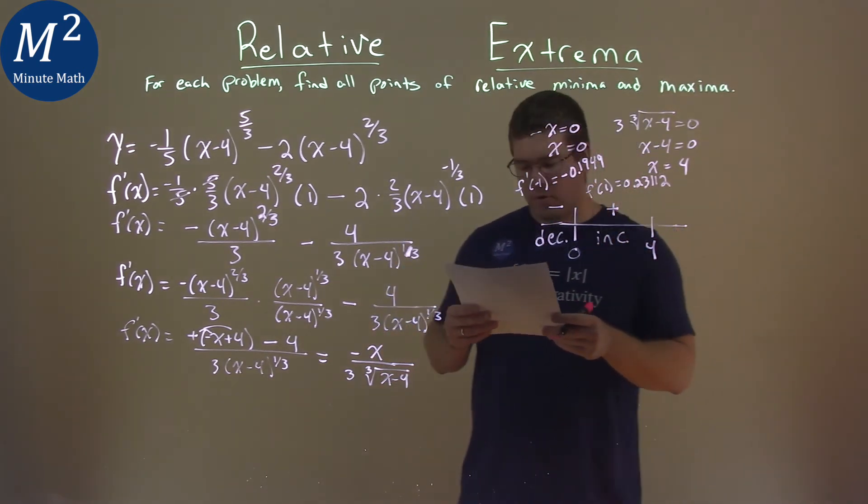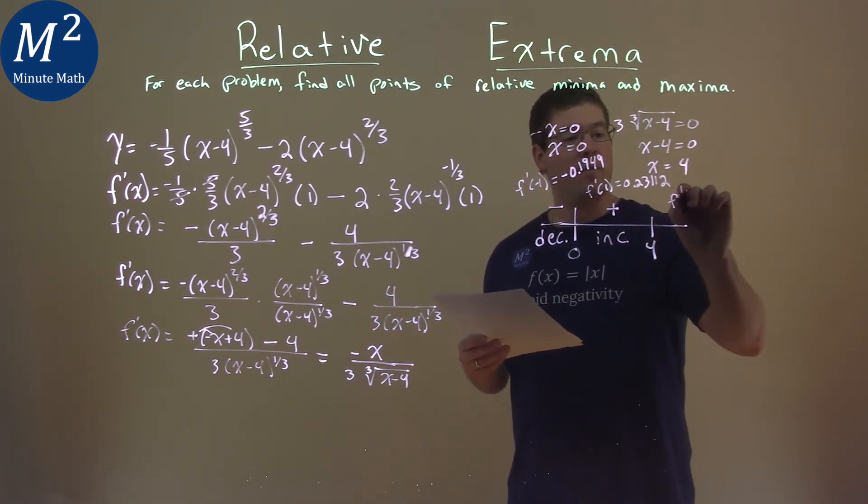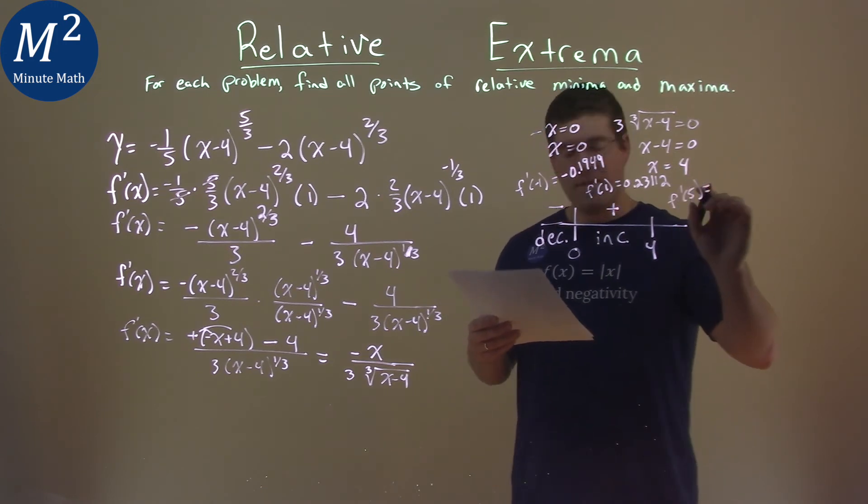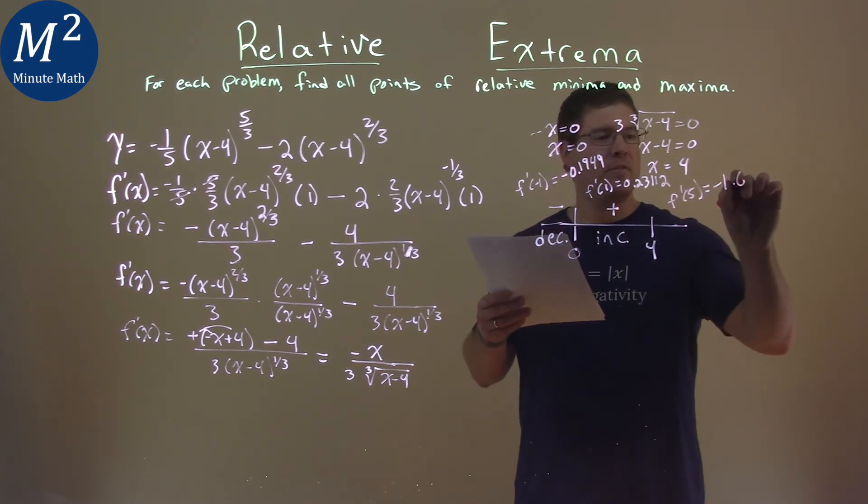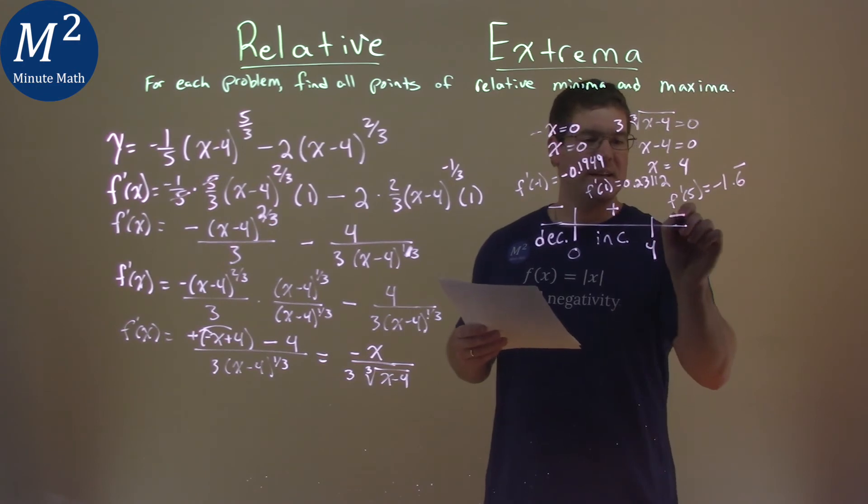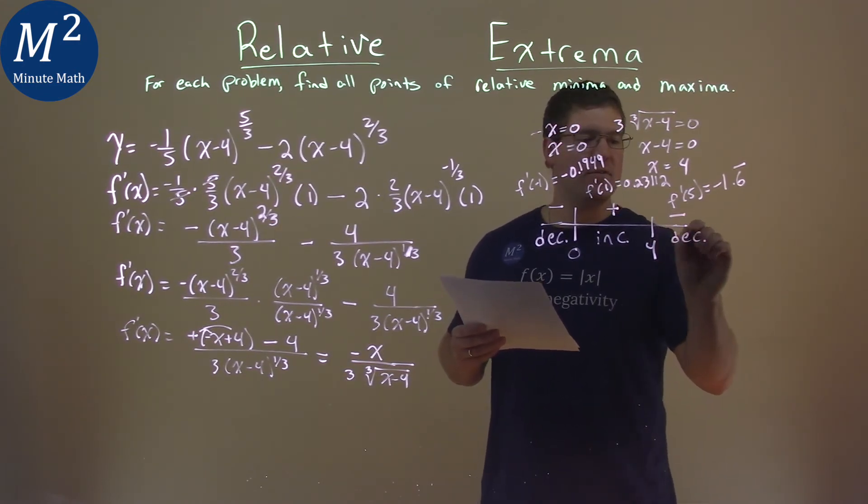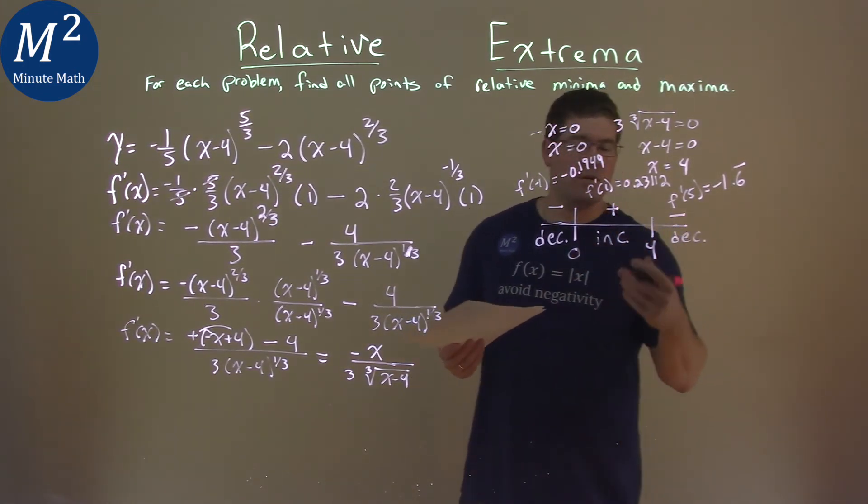A value that's larger than four, I picked five. So, we have f prime of five here, and that came out to be negative 1.6 repeating. It's just negative, and so we're decreasing. And again, we only care if it's positive or negative here.